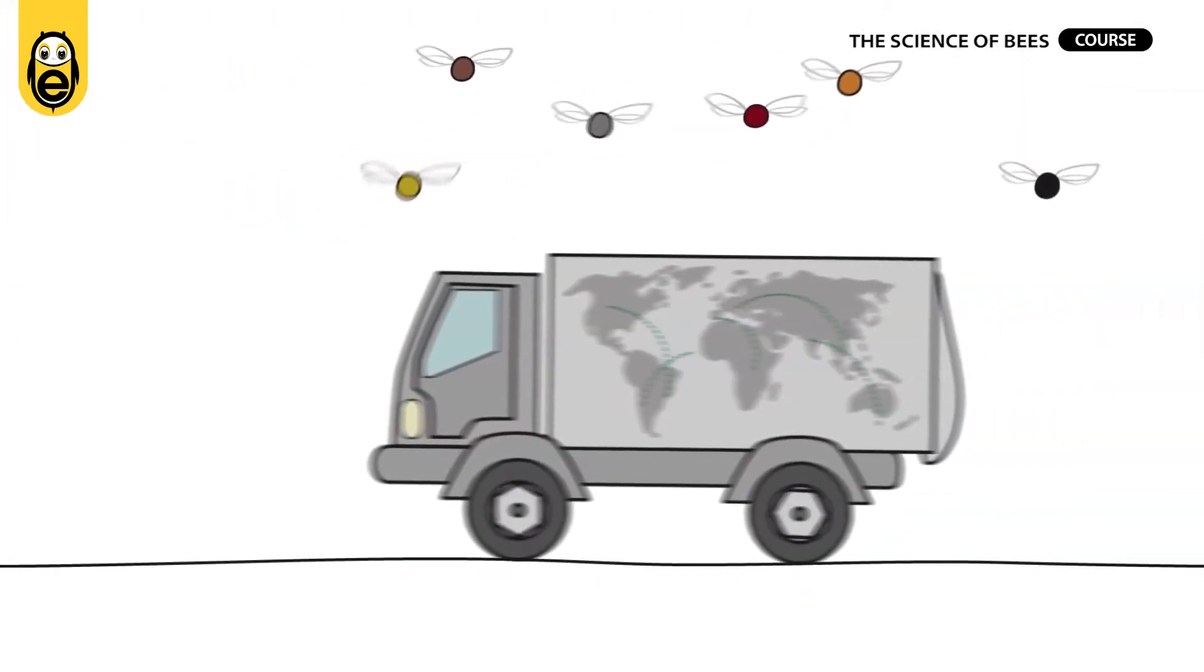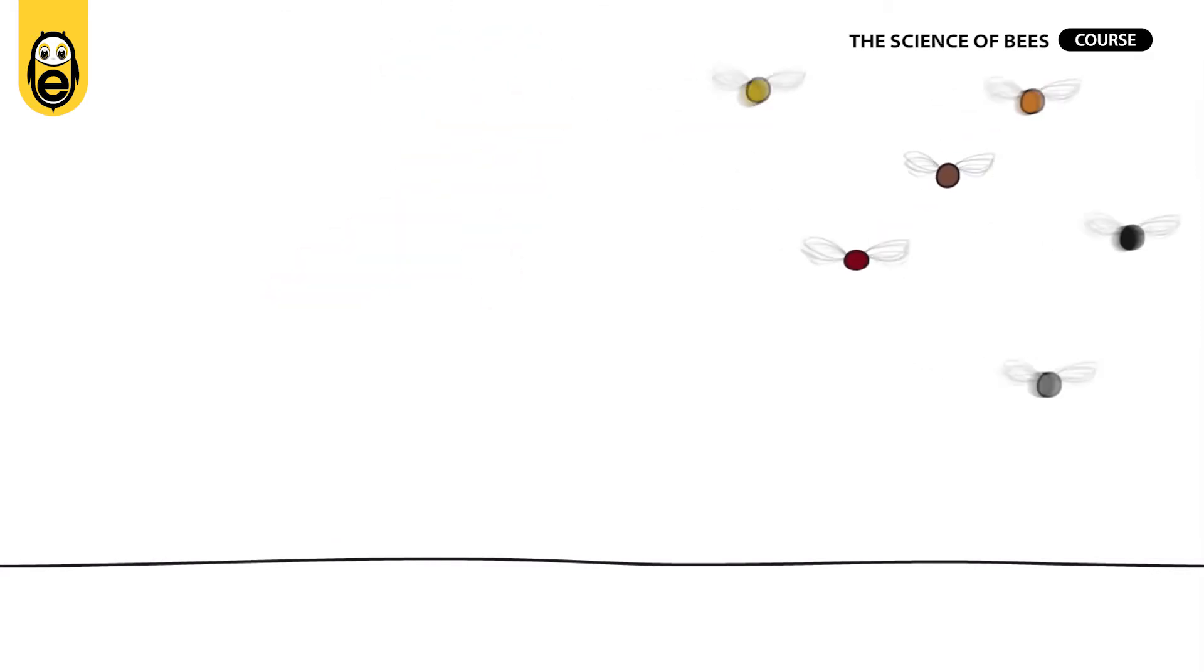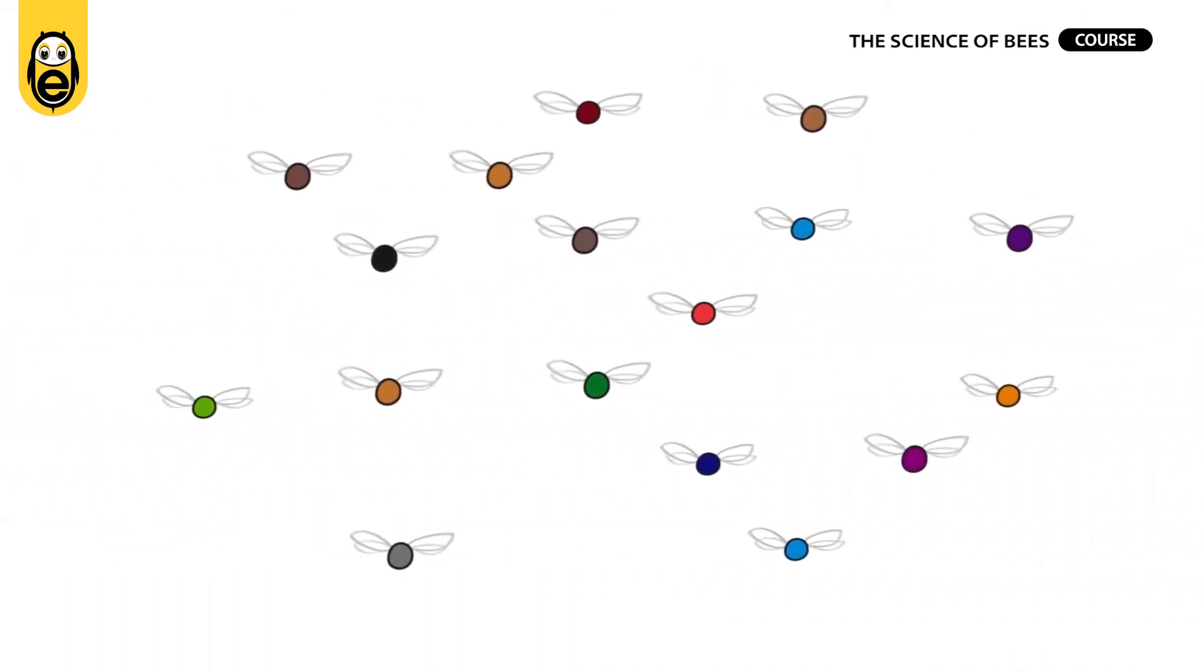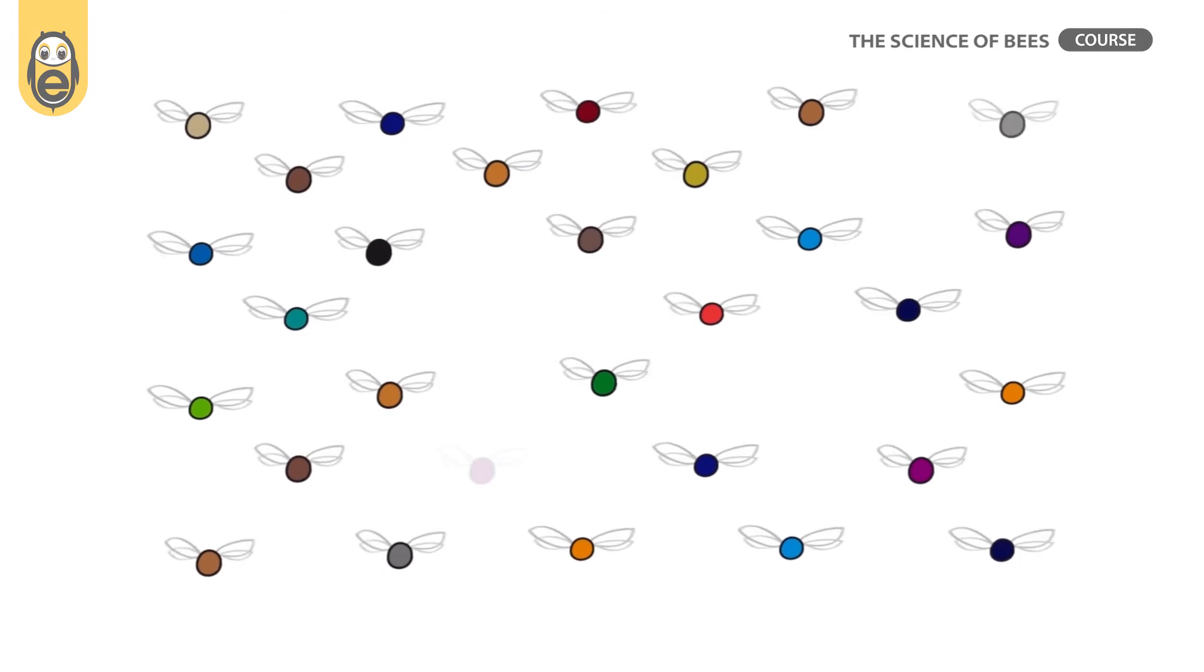We need to slow down global warming by reducing CO2 emissions, and that's not only for bees. Also, we have to be more careful to avoid moving animals indiscriminately around the world. Stopping bee decline is in our hands. In yours, too.